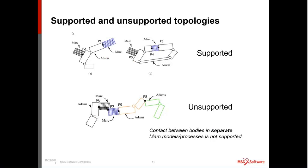This diagram describes the supported topologies. You could have an ADAMS model with two different MARC models interacting with two different parts of the ADAMS model. What's not supported is an interaction between MARC models — two different MARC solver jobs communicating with each other is not supported here. Nor are multiple ADAMS models involved. It's one ADAMS model, one ADAMS solver job, and multiple independent MARC solver jobs.